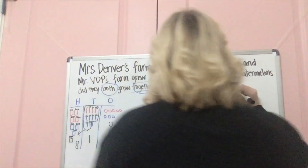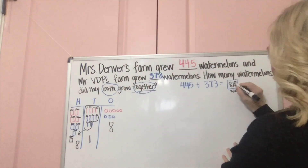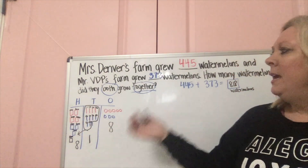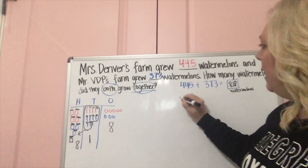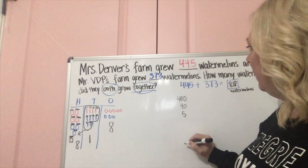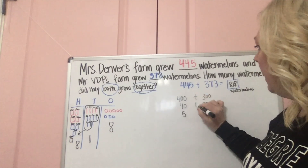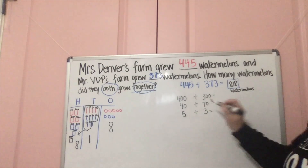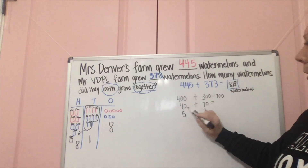818 watermelons — so Miss Denver and Mr. Vanderpool together have 818 watermelons. Good job! I direct-modeled those by drawing all of them out. Now I'm going to use numbers and combine the same units together. Here's our problem — I'm going to do it in expanded form: 400, then 40, then 5. And for 373: 300, then 70, then 3. I know that I add, so I'm going to add all of these together.